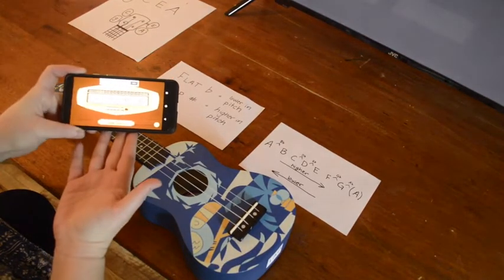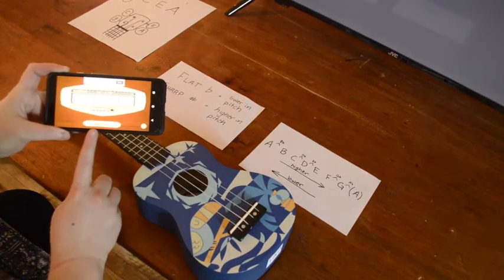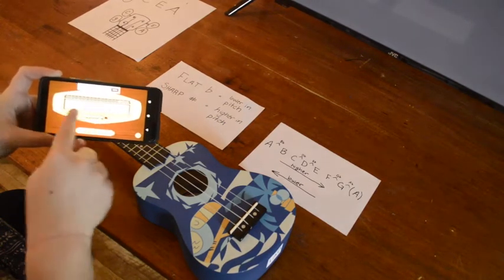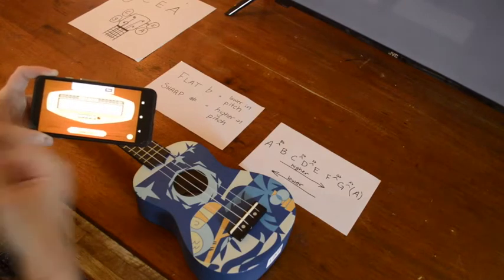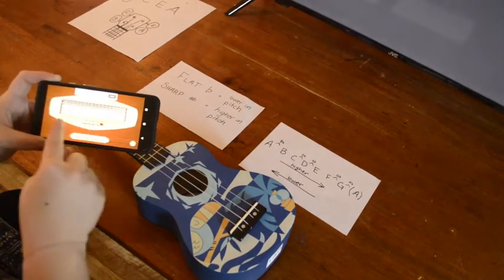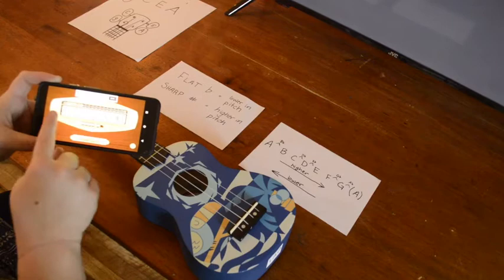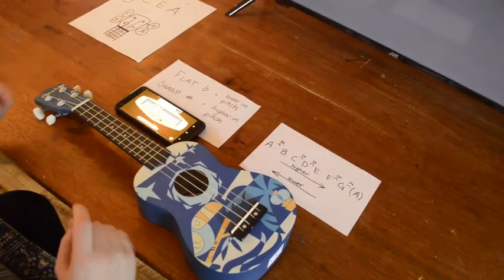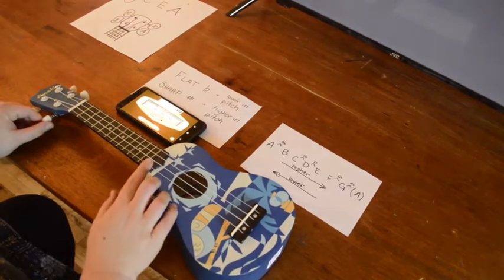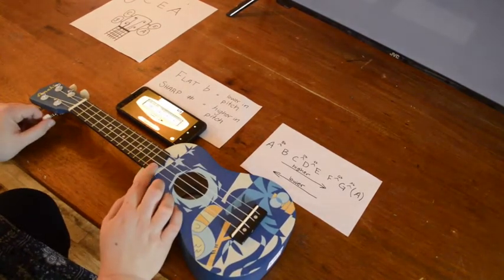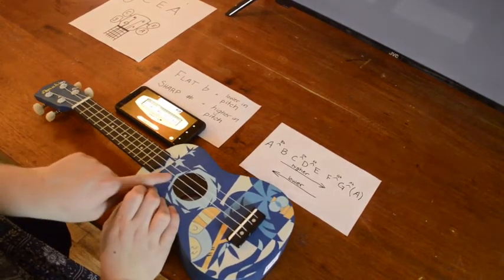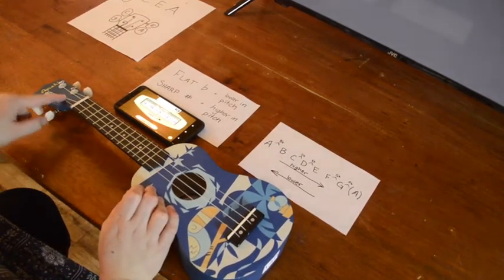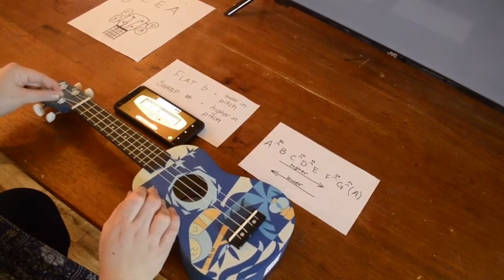So here I've pulled up an app called Pano Tuner and that helps us get in tune. As you can hear it's moving around. It's hearing me talk. There's a microphone that picks up the sounds around it and it tells me what note is playing. So let's tune this ukulele. So I'm going to start with the string closest to me, which if you're not sure which peg to twist, follow that string all the way down and you'll find the peg that it's twisted around.